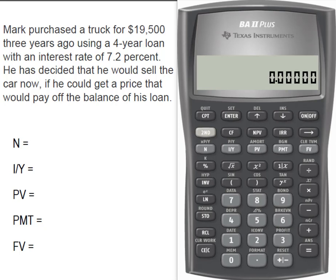The first thing we have to do is figure out what were the monthly payments that he was making on the loan. It was a 4-year loan, so that gave us 48 months, with an interest rate of 7.2 percent. Remember, that's an annual rate, and because he's making monthly payments, we have to divide that by 12 to come up with a monthly interest rate of 0.60.